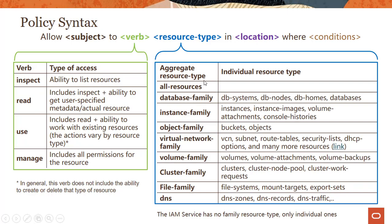Resource types are basically two kinds in OCI: the aggregate resource type and the individual resource type. Aggregate resource types are tied to the various resources you have in OCI. The simplest way to look at it is: if you want to give somebody access to everything in OCI, just use the resource type called all-resources. If that's not what you want, you could go granular — for example, database family, instance family, or virtual network family.